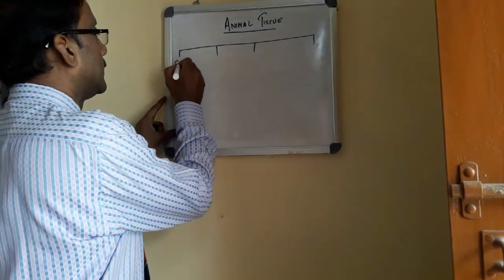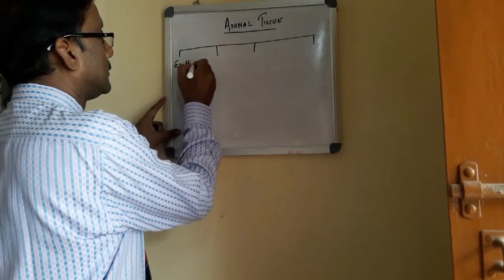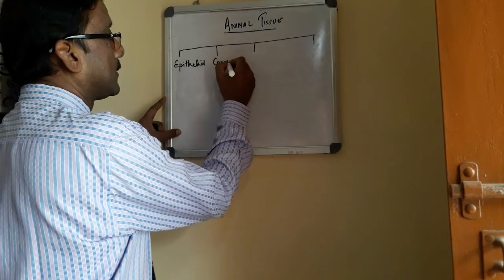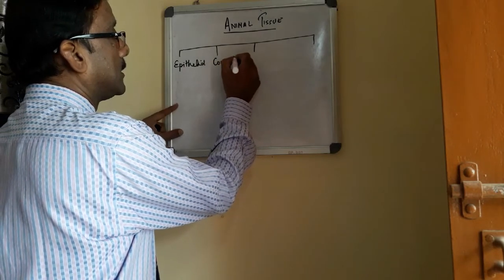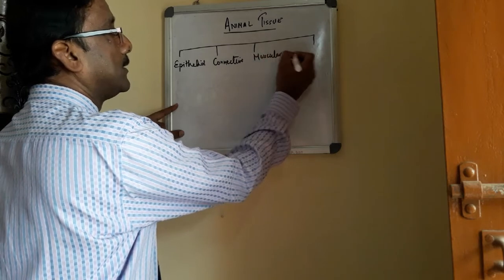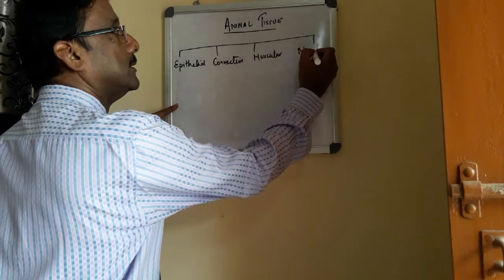First one is epithelial, second one is connective, third one is muscular, and the fourth one is nervous.